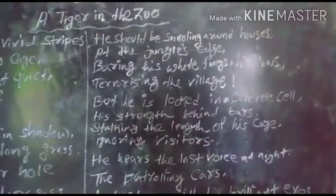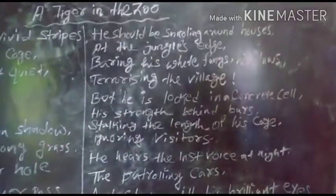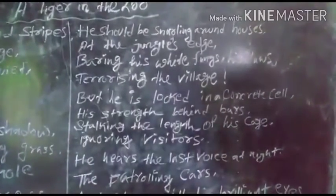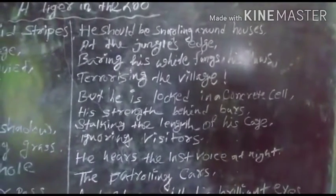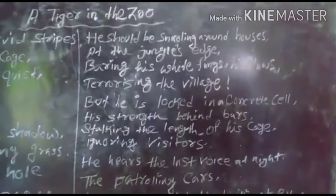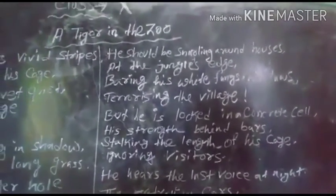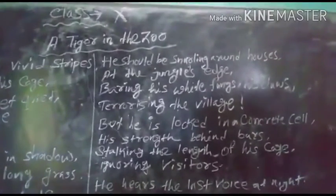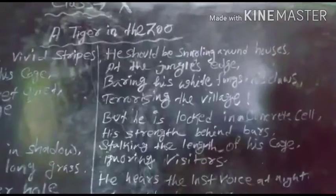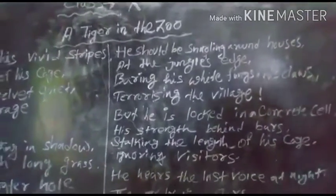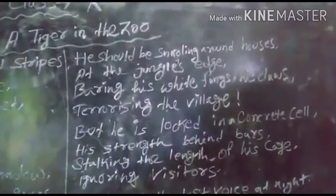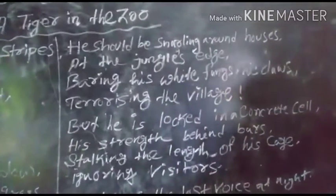If we explain this stanza into English, it will be like this: The poet pities that the tiger should have been lurking and sliding in the tall grass instead of being in the cage. He should have been in his natural habitat, hunting and resting. Obviously, the poet implies that his freedom has been snatched from him. He should have been stalking some fated deer near a water hole and lying there expecting a good feast.